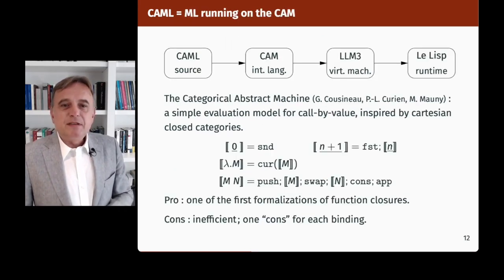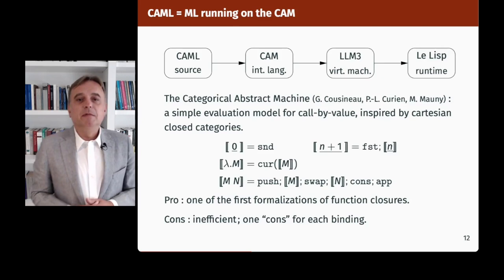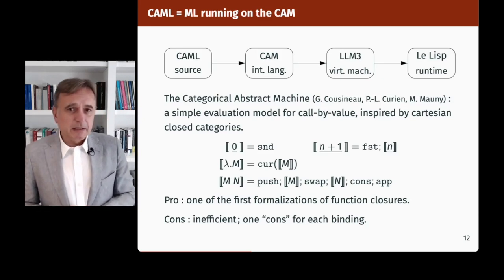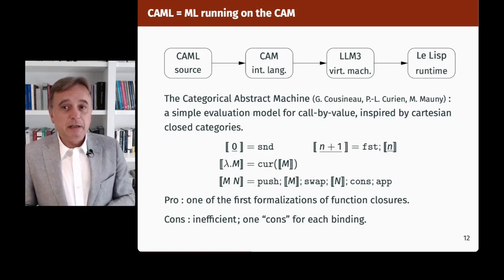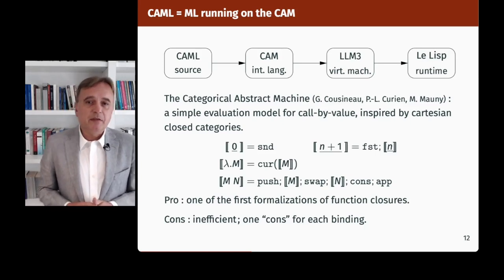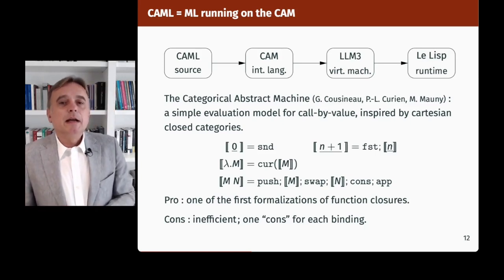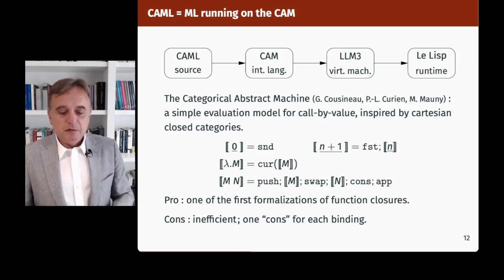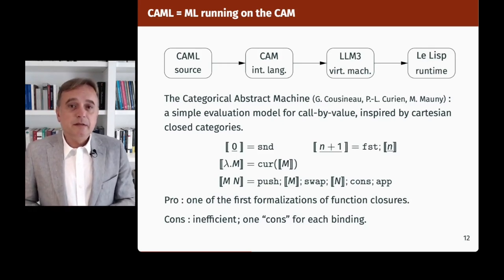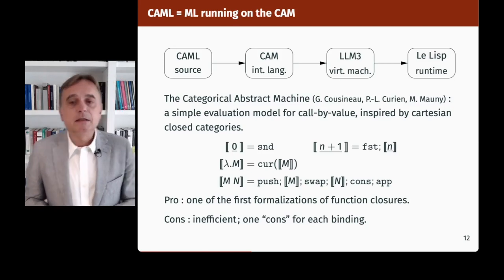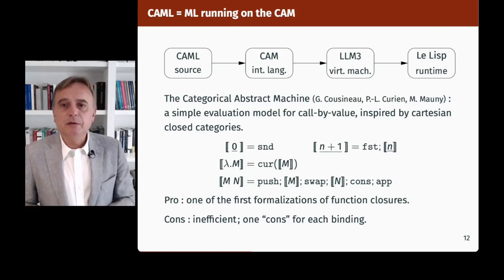Camel was developed alongside the Coq proof assistant, basically as Coq's implementation language. In the early 80s, Roger Huet decided that the calculus of constructions would be implemented not in Lisp but in a language with more types, and so he chose ML. What gives Camel its name is its implementation technology — ML running on the CAM. It was implemented on top of a Lisp runtime system, the LLisp system and its LLM3 virtual machine, compiling for an intermediate language based on the CAM — the Categorical Abstract Machine — worked on by Guy Cousineau, Pierre-Louis Curien, and Michel Mauny.